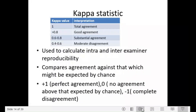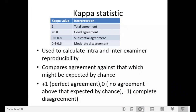Kappa statistics is used to calculate intra- and inter-examiner reproducibility. Intra-examiner reproducibility means that if the same examiner sees the same patient again, the findings should be in total agreement. Inter-examiner reproducibility means that if the same patient is examined by different examiners, there should be either total agreement or only minor differences, with the Kappa statistic calculated as substantial or moderate. Ideally, in a survey, the Kappa statistic should be between 0.8 and 1, indicating perfect or good agreement.